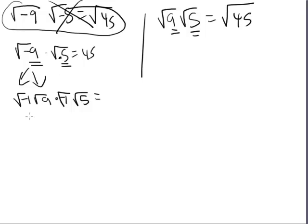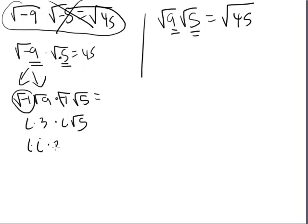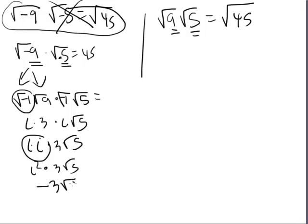So we might as well wrap this problem up. You can simplify the square root of negative one to be i. Square root of nine is three. And we have another i and the square root of five. Now we've got four terms being multiplied, so we can arrange multiplication any way we want. We can say this is i times i times three times root five. Remember, i squared equals negative one. So this is negative three root five.